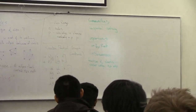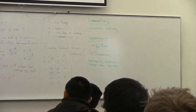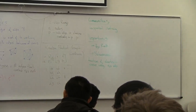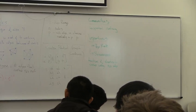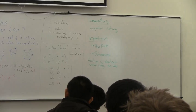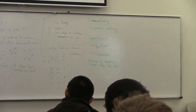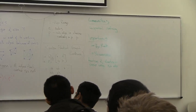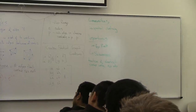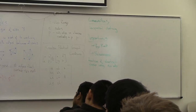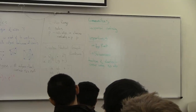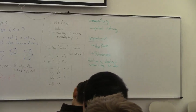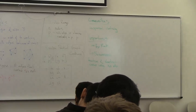Consider how many shortest paths use a given edge. For an endpoint node (leaf), it's going to be n minus 1 — there are n-choose-2 shortest paths total, which is n(n-1)/2, and n-1 of them use this edge because anything including this node has a shortest path going through that edge.